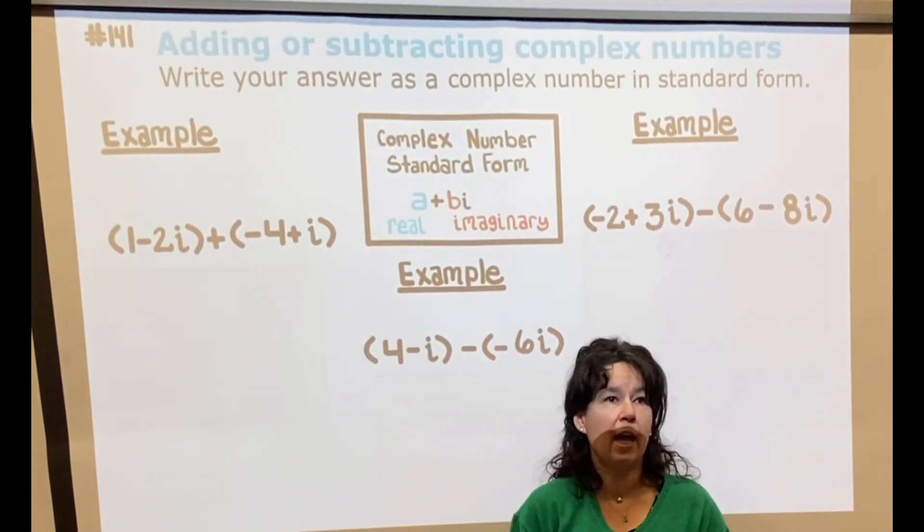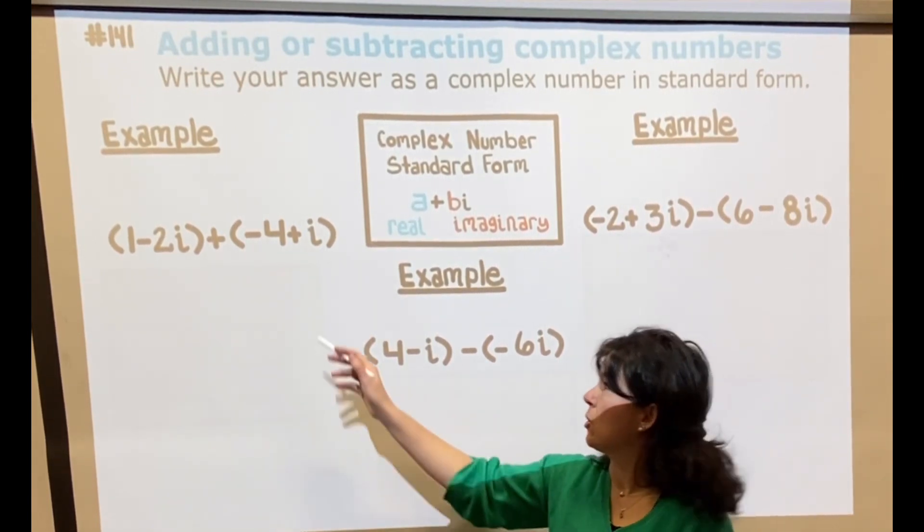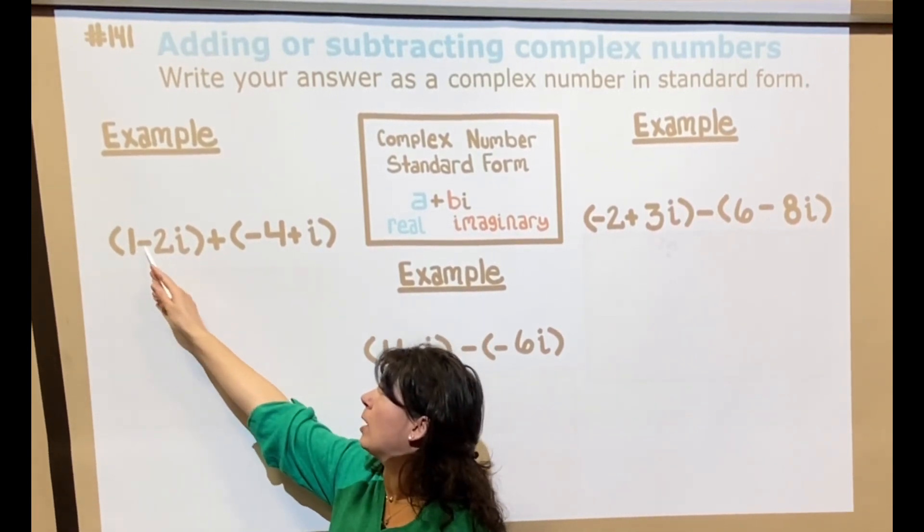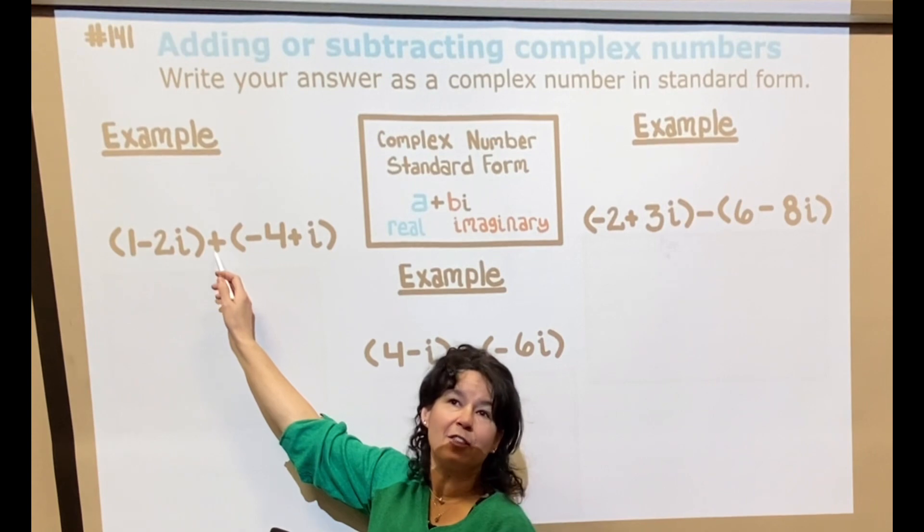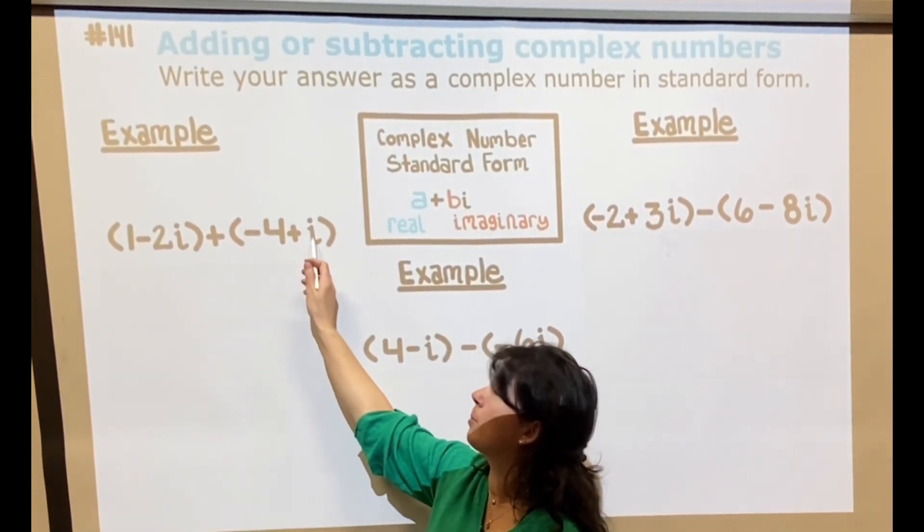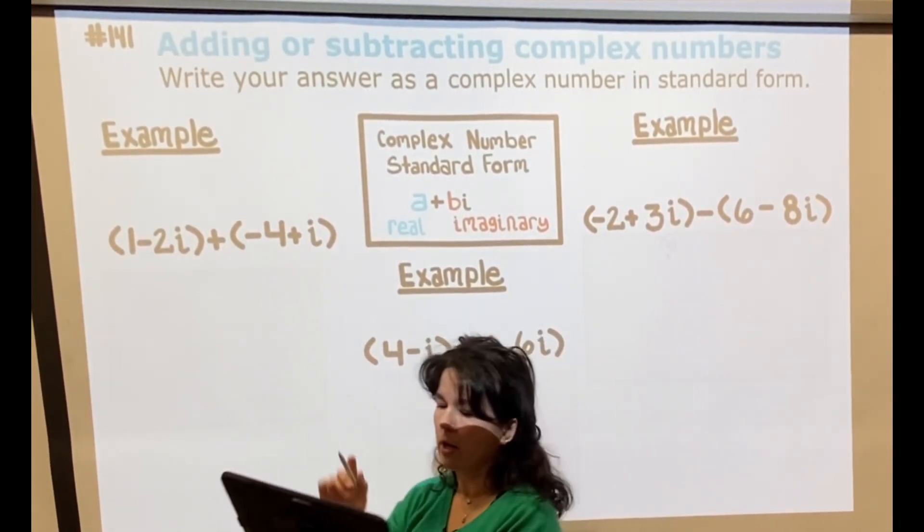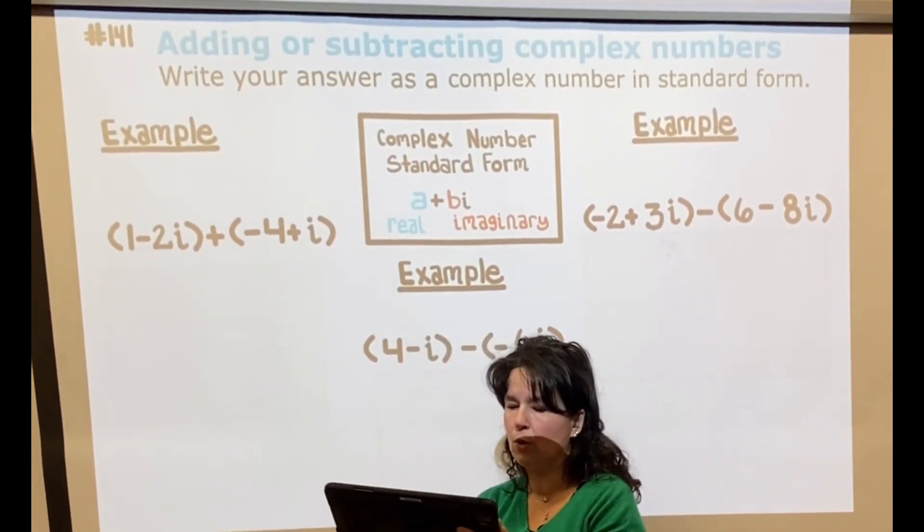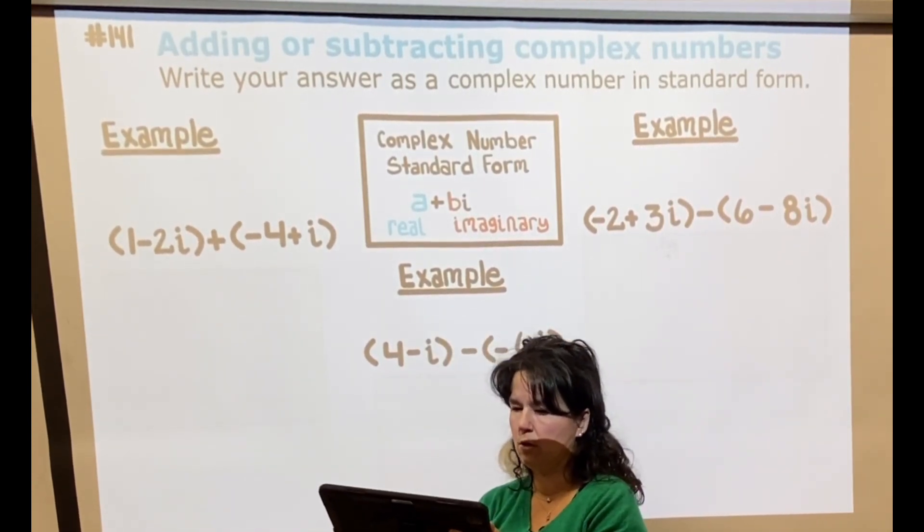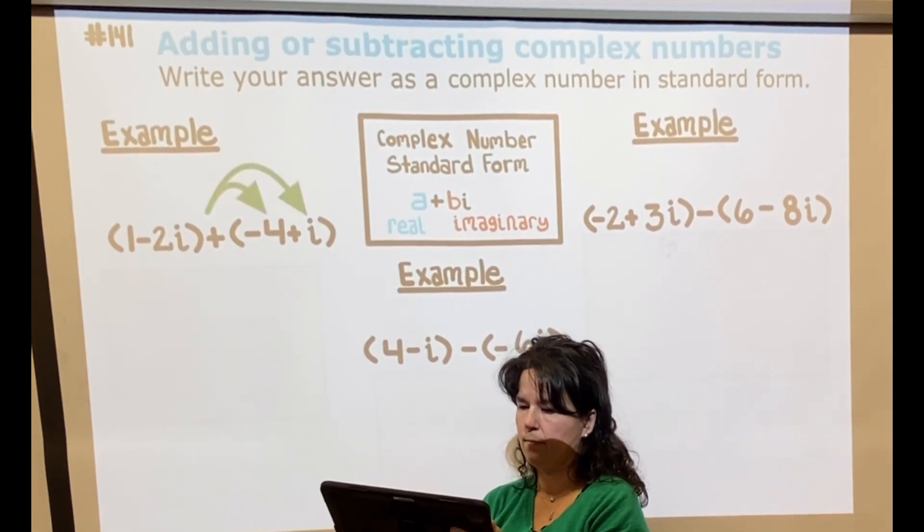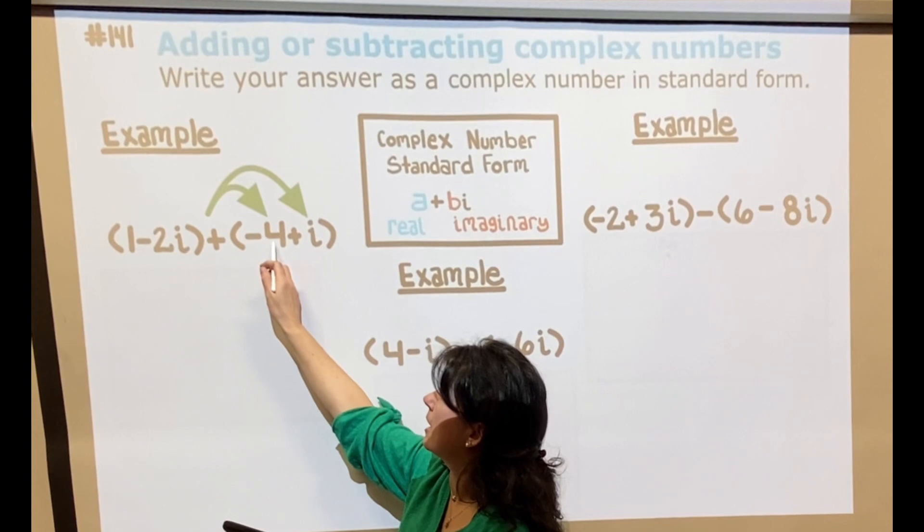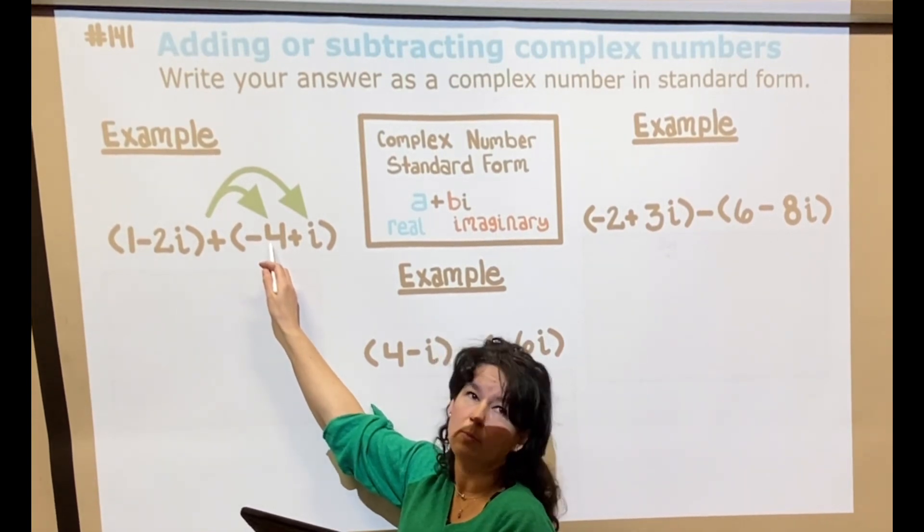So if this one right here, I have a complex number a plus bi: 1 minus 2i, plus another complex number negative 4 plus i. I'm going to go ahead and distribute this positive through. If I distribute the positive, it's like positive 1 times negative 4, which is minus 4, positive 1 times positive i, plus i.